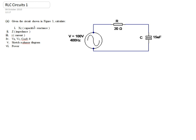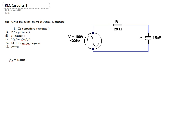First of all, we'll calculate the capacitive reactance of the circuit. The capacitive reactance Xc is equal to 1 over 2 pi FC. So if we plug the values in, we have Xc equal to 1 over 2 multiplied by pi, multiplied by F, which is 400 hertz, multiplied by the capacitance, which is 15 microfarads. That gives us a value of 26.5 ohms.